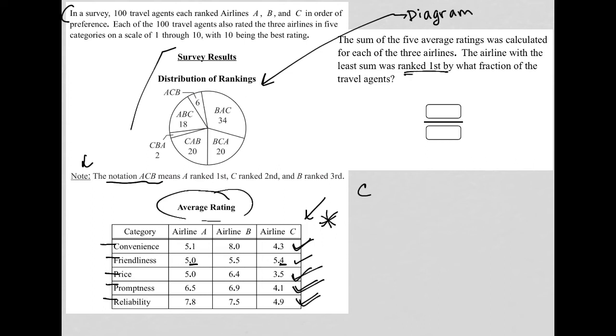Right, C, then B, then A. Also, these 20 travel agents here, C, then A, then B. Nowhere else is airline C ranked first.